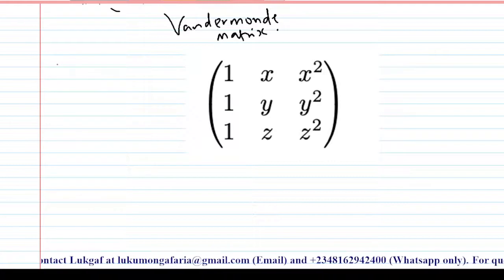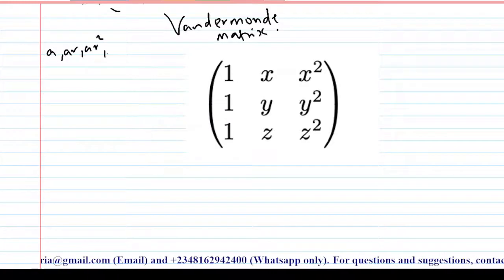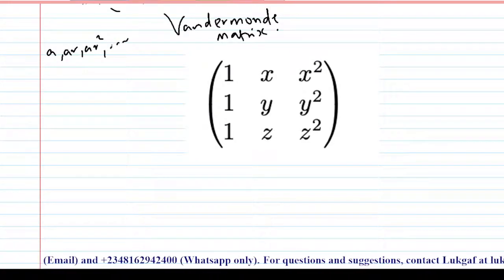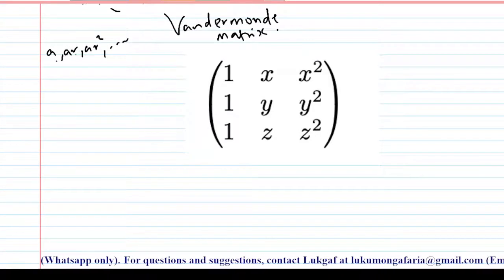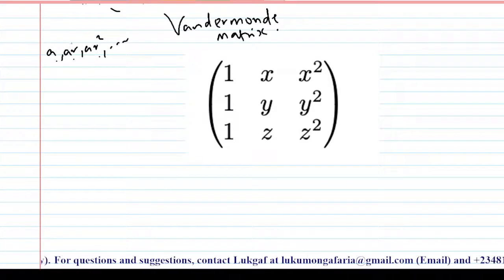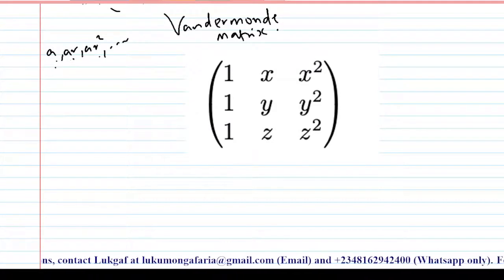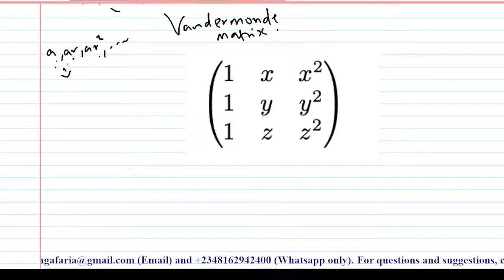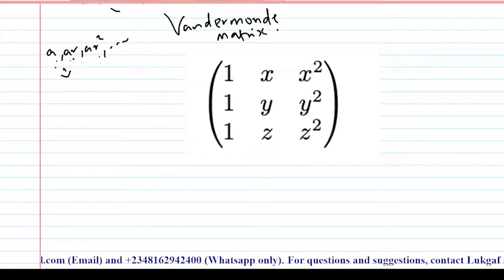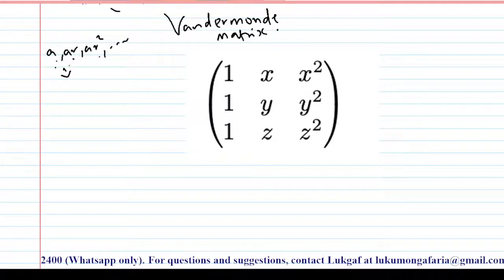For example, from high school we are all aware of this kind of sequence. The successive terms are, for example, A, AR, AR squared. You will observe that the common ratio between two successive terms is R.